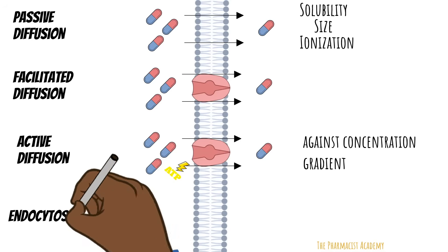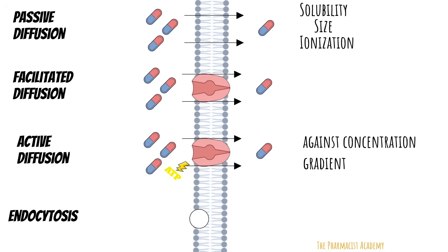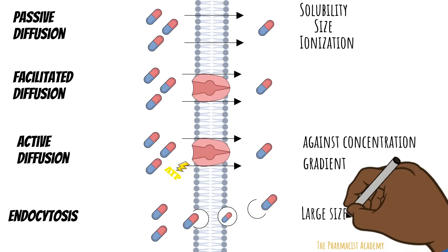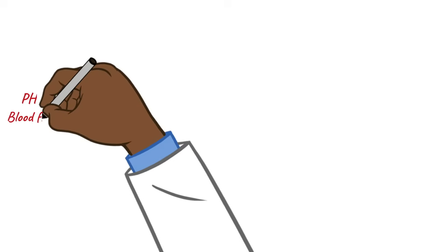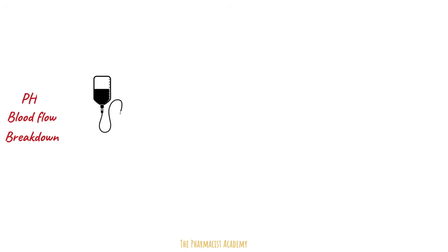Finally, in endocytosis, the drug is transported by engulfment of the cell membrane and released on the other side. This is more common for large drugs since they can't passively diffuse or fit in carrier proteins. Unfortunately, during absorption some drugs do get lost and the amount reduces by the time it reaches the bloodstream — due to pH, blood flow to that area, and enzymatic breakdown. This can be avoided by administering the drug directly into the blood. When you give IV drugs, the patient gets 100% of the dose.